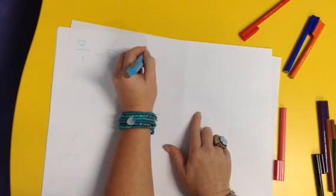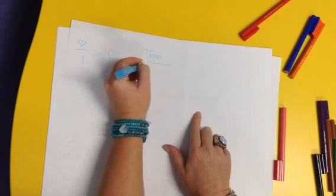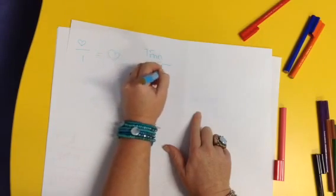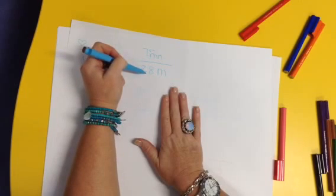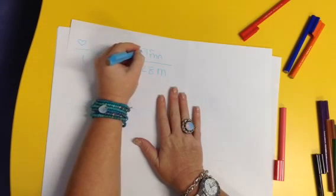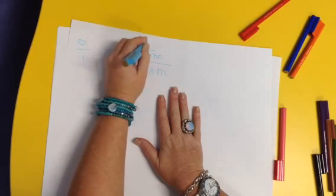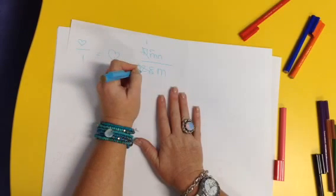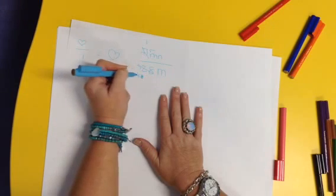I want to do 7mn over 28m. Okay, so we say, right, what can go into both of those? 7. Okay, so we divide by 7, divide by 7. 7 goes into 7 once. 7 goes into 28 three times. No, four times. Oh goodness me, four times.